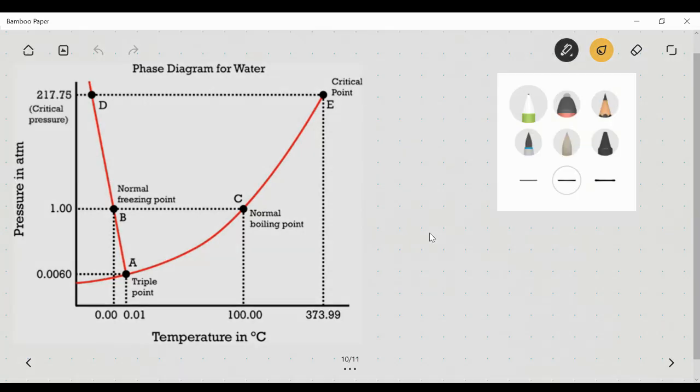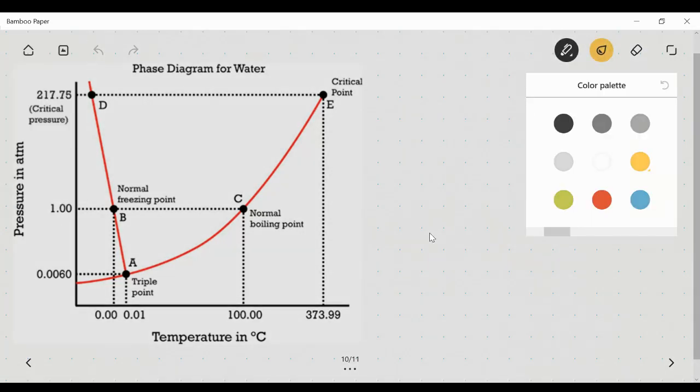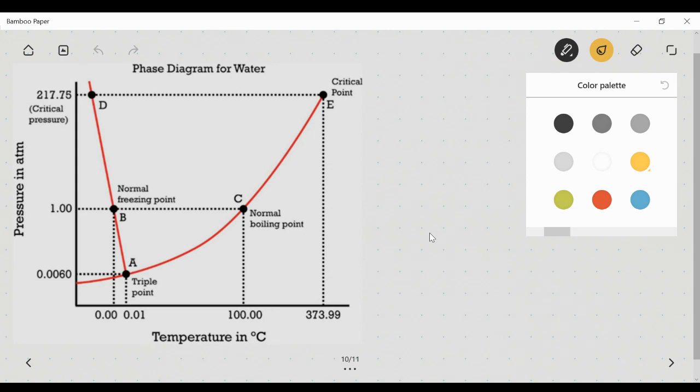So in this graph, we have water in all three phases. If you think about how and when water exists in a particular condition, it generally is going to be ice at pretty low temperatures, liquid at intermediate temperatures, and a gas at higher temperatures.